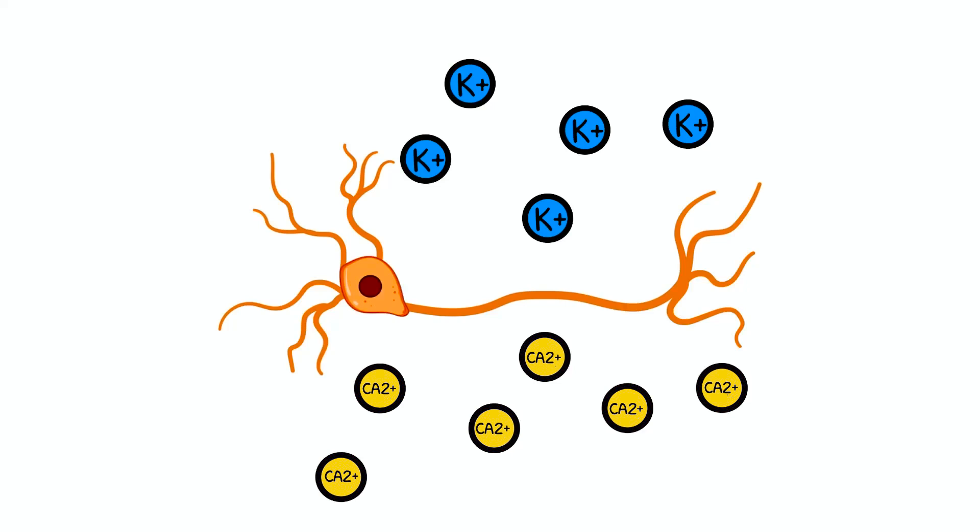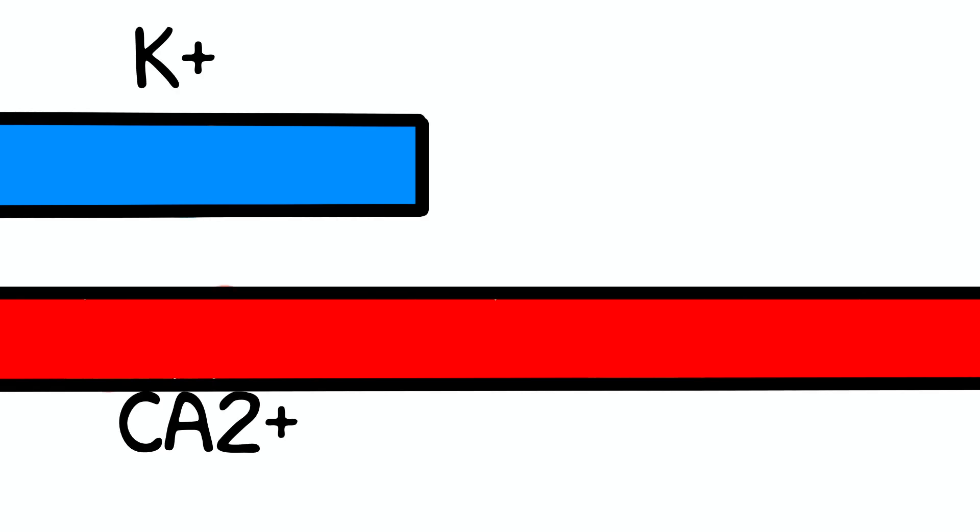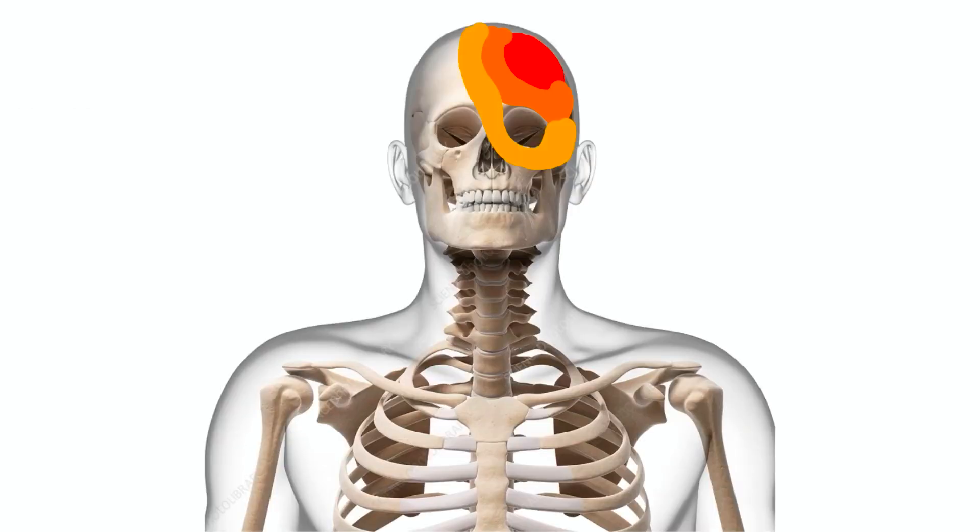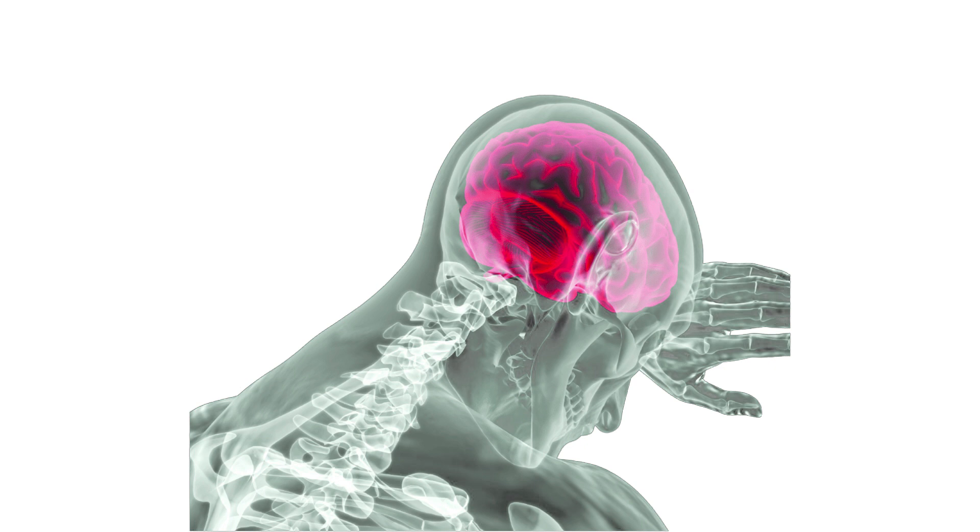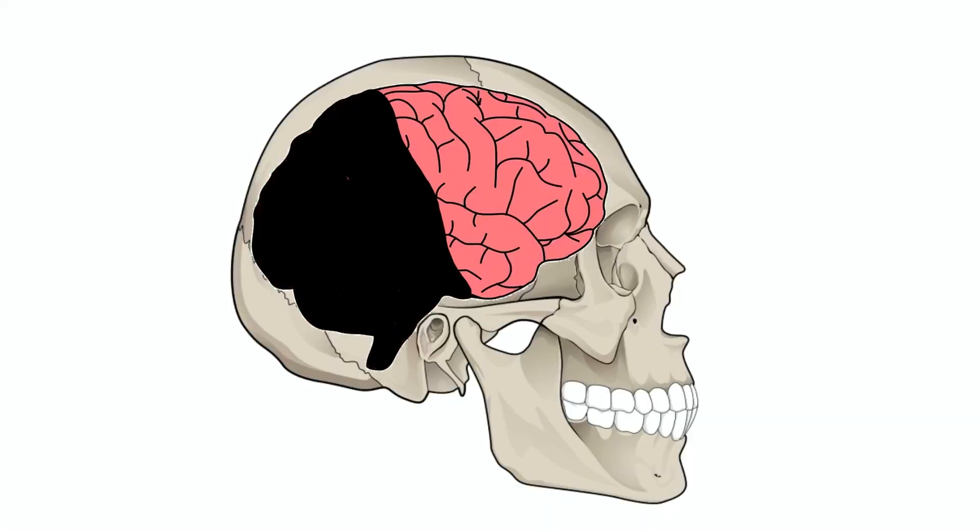Every time a fighter receives a blow to a nerve, potassium leaves a cell and calcium rushes in, destabilizing the electrolyte balance. While the brain does all it can to keep those levels in balance, with each successive blow, this balance becomes harder and harder to maintain, and more and more energy must be spent in the process. When the body reaches the point where the damage outweighs the body's ability to repair itself, the brain shuts down to conserve enough energy to fix the injured neurons at a later point.